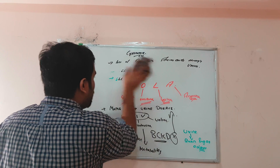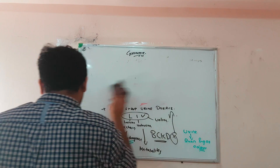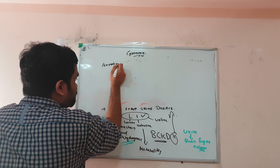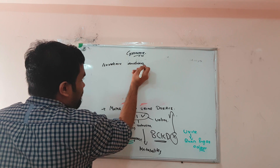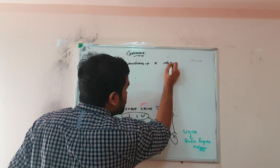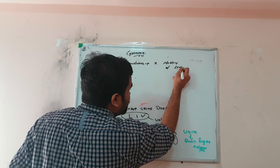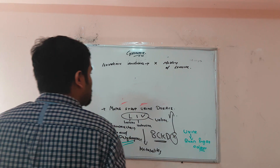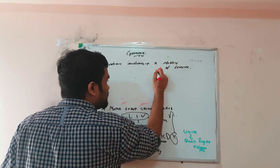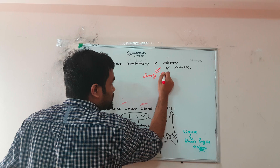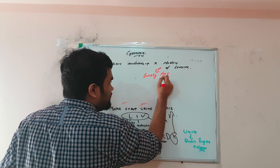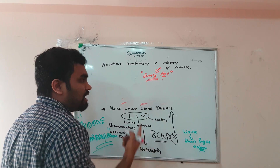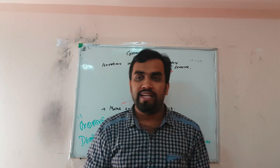The next disease is isovaleric aciduria. This is an important MCQ point. Isovaleric aciduria involves improper metabolization of the amino acid leucine — not isoleucine, but leucine. The typical characteristic is that the urine or body will smell sweet, like sweaty feet or sweet food.